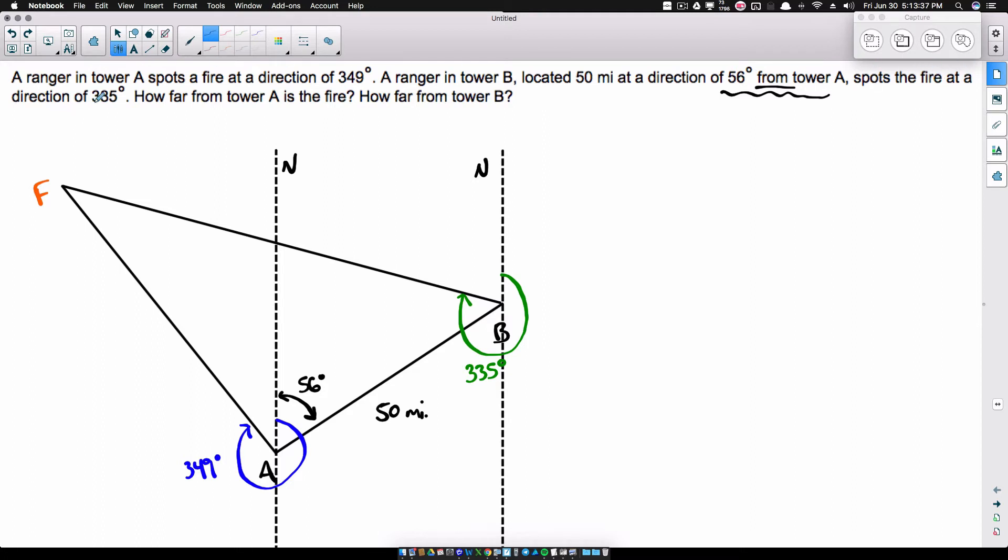But it also says that tower B spots the fire at a direction of 335 degrees. So going to tower B, north direction, go clockwise 335 degrees. Now, let's go ahead and start finding some missing pieces. Because what we want to do is we want to find how far from tower A is the fire. So we're trying to figure out this one here. And then we're trying to figure out how far from tower B is the fire. So we're trying to find the distance all the way across that triangle there. And then this blue one here, how far is tower A from the fire, we're trying to find that length right there as well.